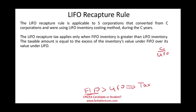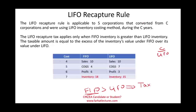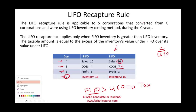Let's use simple numbers. Assume you're selling widgets and the costs of the widgets are $5, $4, $5, $6, and $7 — so $7 is the most recent cost. Assume you sold each widget for $10 and you sold one widget. Starting with LIFO: sales are $10, and using LIFO you sell the $7 item, so $10 minus $7 equals $3 of profit. What's left in your inventory is $4, $5, and $6 — your inventory under LIFO is $15.